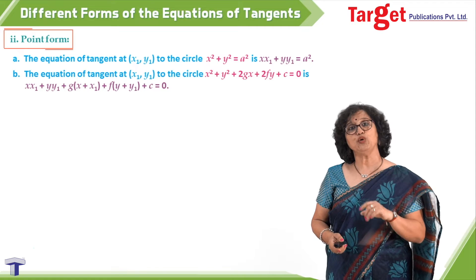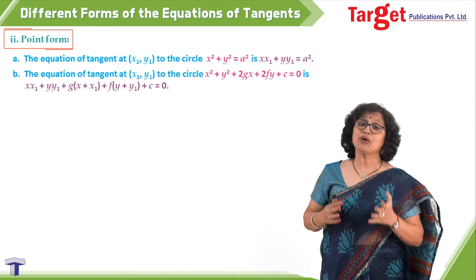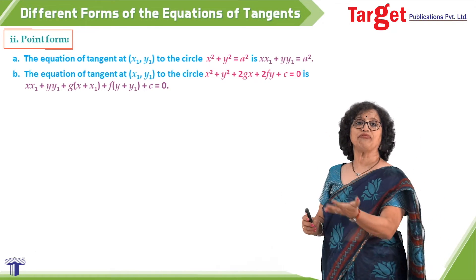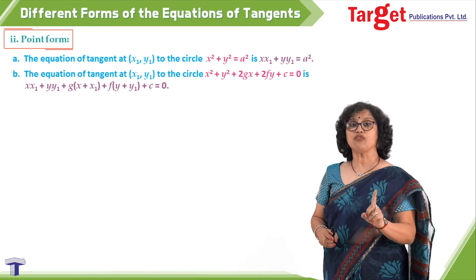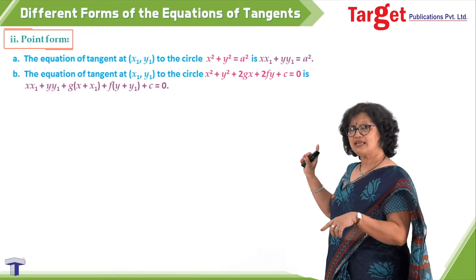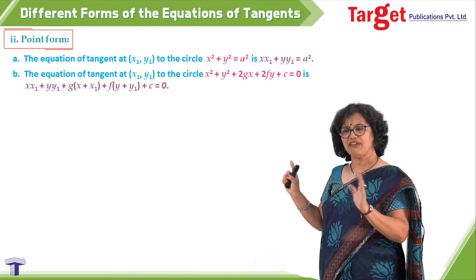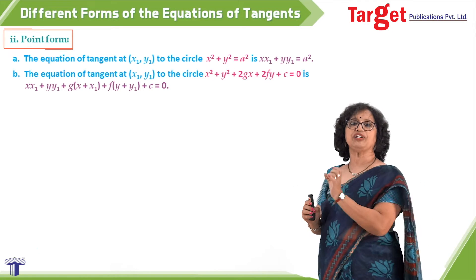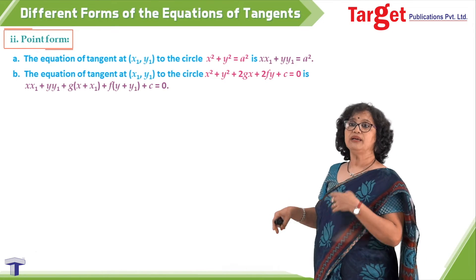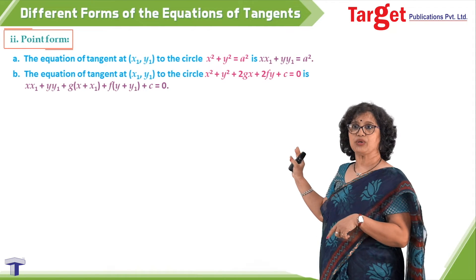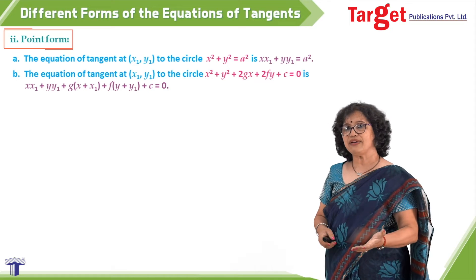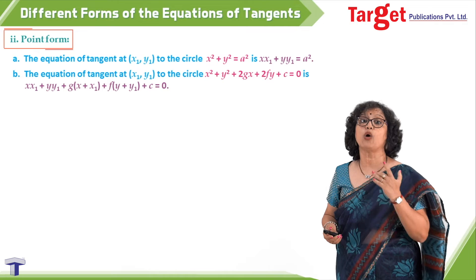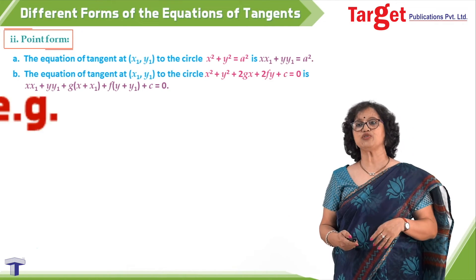For a general circle x² + y² + 2gx + 2fy + c = 0, the tangent at point (x₁, y₁) is: xx₁ + yy₁ + g(x + x₁) + f(y + y₁) + c = 0. The term 2gx is written as g(x + x₁), and similarly 2fy becomes f(y + y₁). It is better to remember this as a formula rather than re-derive it each time, since applying the formula is much faster.